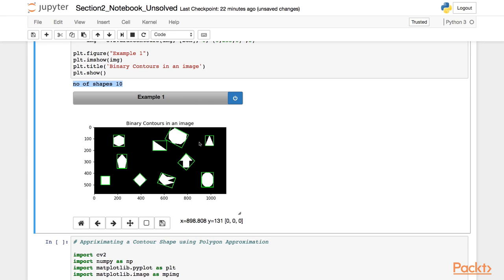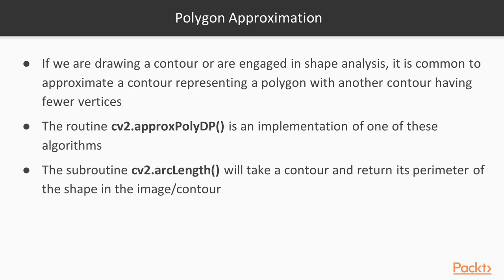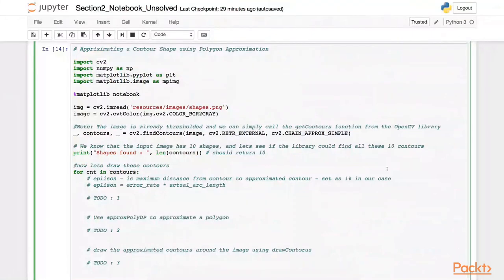We just tried to approximate a contour by fitting a rectangle. Now let's see how we can approximate a contour of arbitrary shape using a polygon approximation method. Polygon approximation is a way to approximate the shape of a contour in an image using polygons. We can use the OpenCV function ApproxPolyDP for applying a polygon to fit the shape, and the arcLength function to get the perimeter of the contour. In this example, we try to approximate the shape of the contour by fitting a polygon curve, unlike fitting a rectangle as we did earlier.